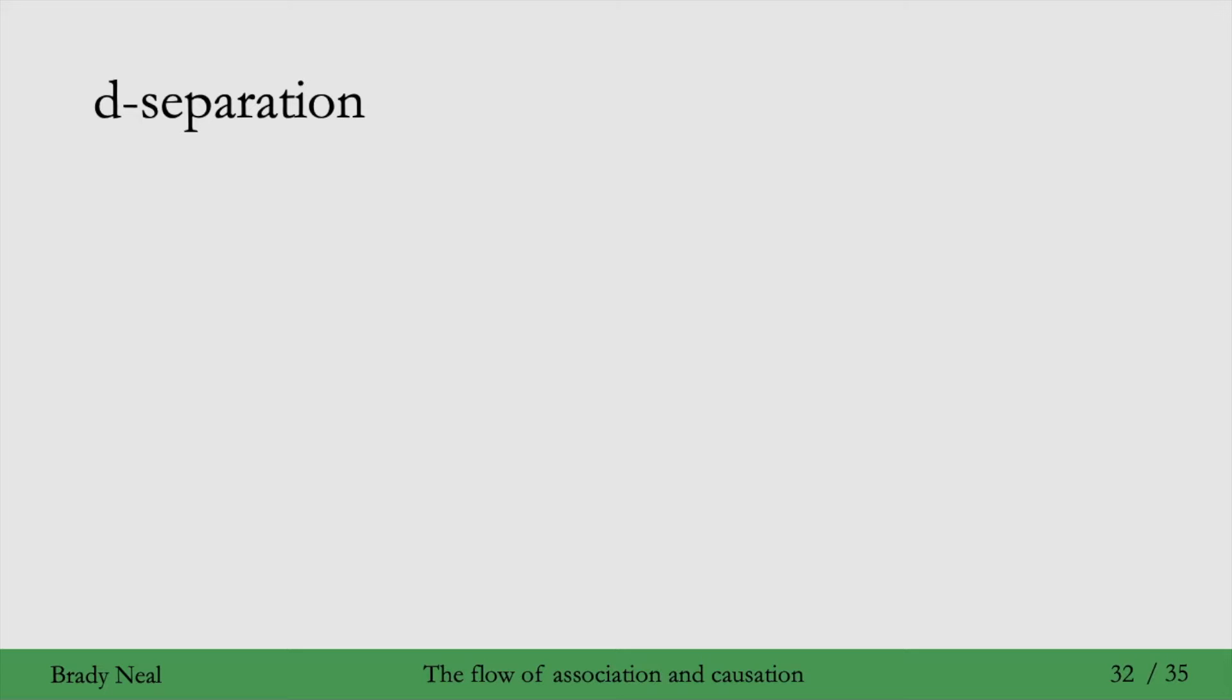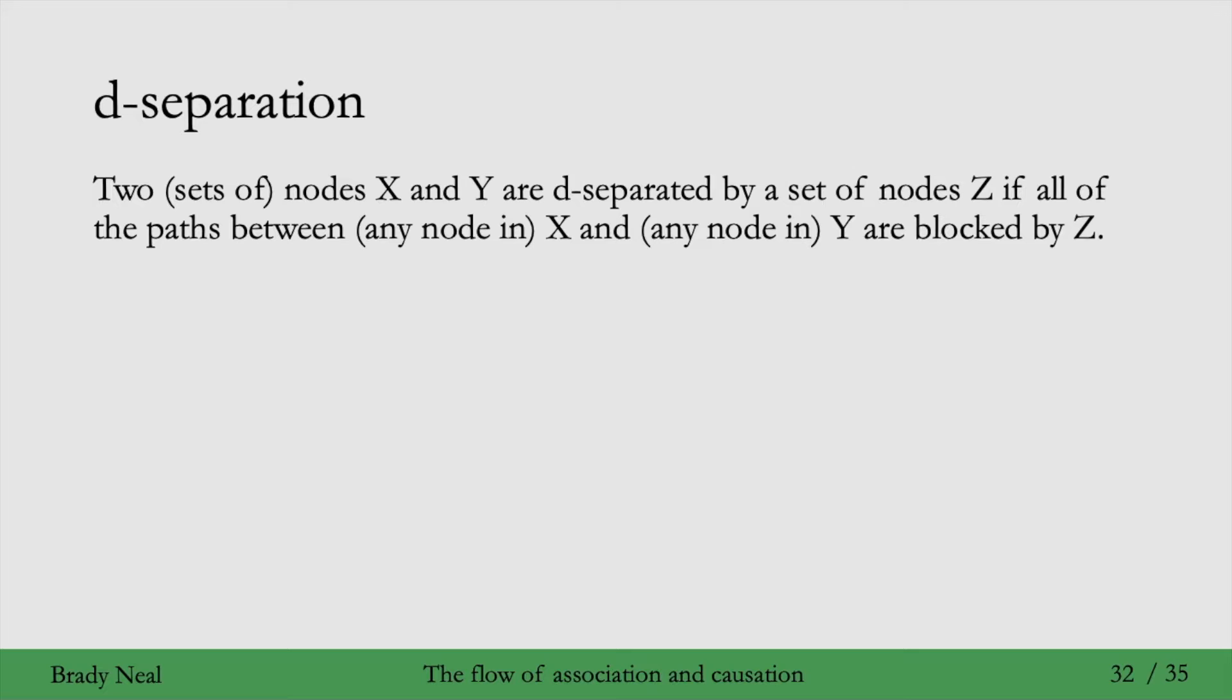With the notion of a blocked path defined, it's really easy to define d-separation. And it's that two sets of nodes X and Y are d-separated by a set of nodes Z if all of the paths between any node in X and any node in Y are blocked by Z.